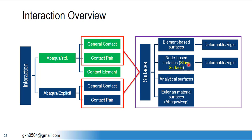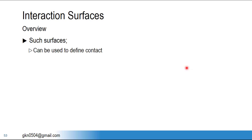When defining interaction you have two things: a master surface and a slave surface. If you want to define a node-based surface, you can define it only as a slave surface. Using such contact surfaces or interaction surfaces, you can define contact — that is the first and most obvious application.